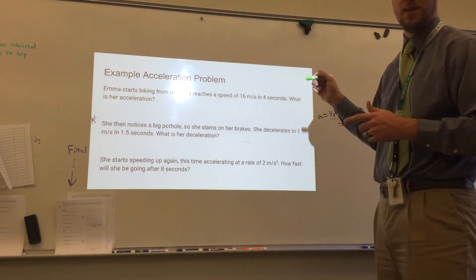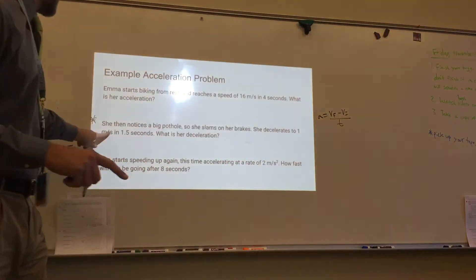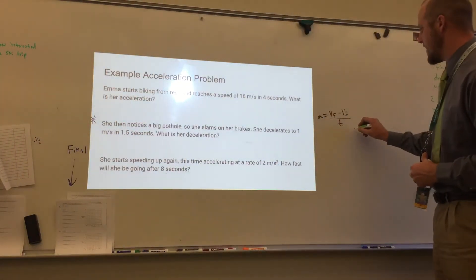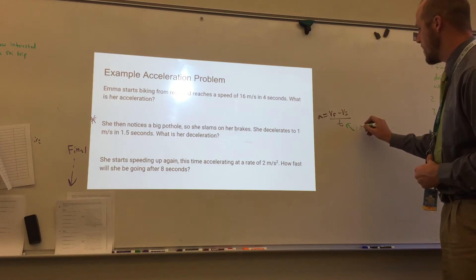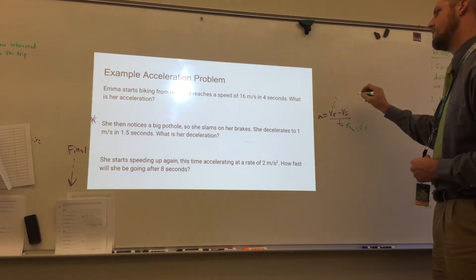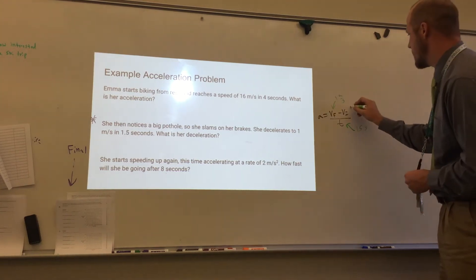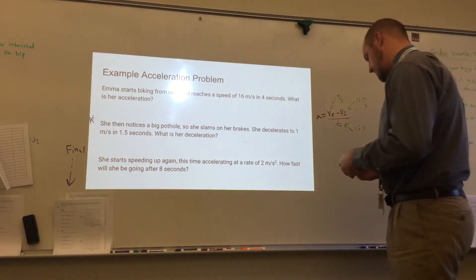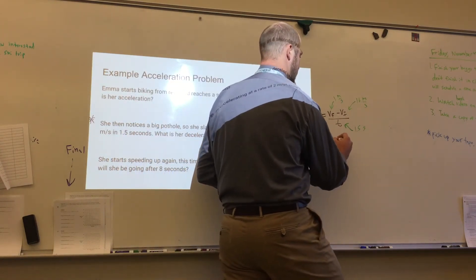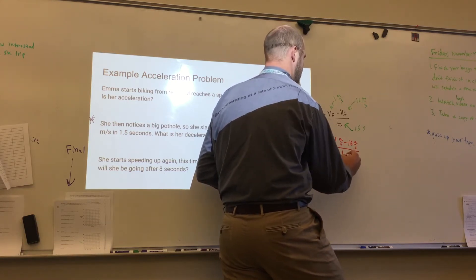Okay, I am re-recording one section of this video on acceleration that I initially made a mistake on. When you're plugging the values in for this second question, she decelerates to 1 meter per second in 1.5 seconds. What is her deceleration? I accidentally put 1 second in there. That should be 1.5 seconds. Her final velocity is 1 meter per second, and her initial velocity was 16 meters per second. So if I solve that, we've got A equals 1 meter per second minus 16 meters per second divided by 1.5 seconds.